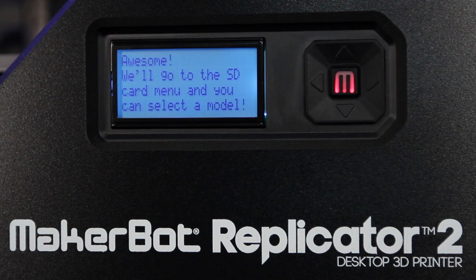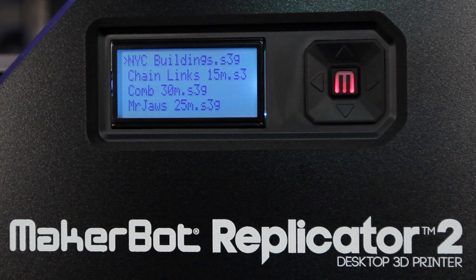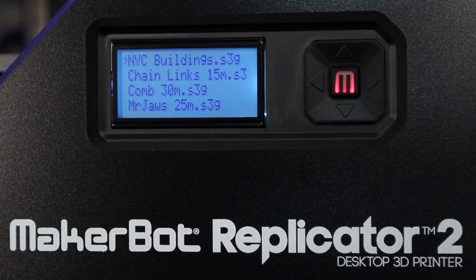Your MakerBot Replicator 2 will drop into the Build from SD menu. Select one of the things we've preloaded onto your SD card, hit M, and watch your MakerBot Replicator 2 work its magic.